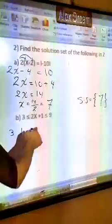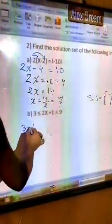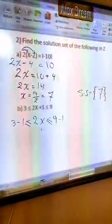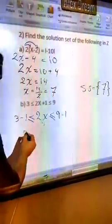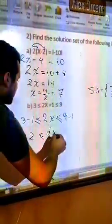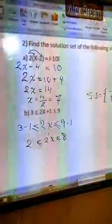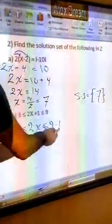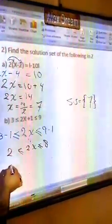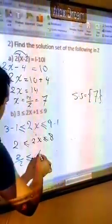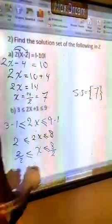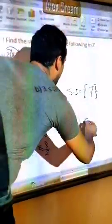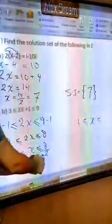So it becomes: 2 ≤ 2x ≤ 8. Now I want to isolate x, so divide all parts by 2. That gives 2 over 2 ≤ x ≤ 8 over 2, which simplifies to 1 ≤ x ≤ 4.